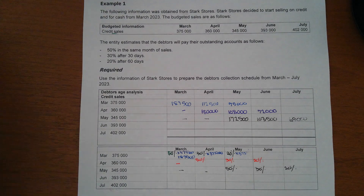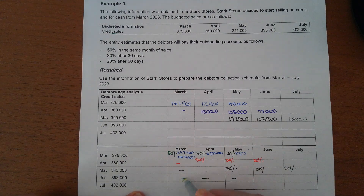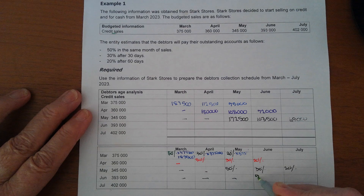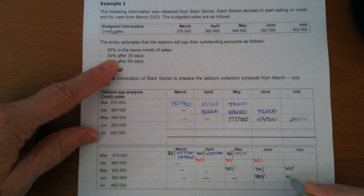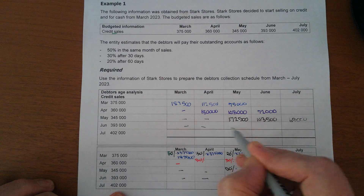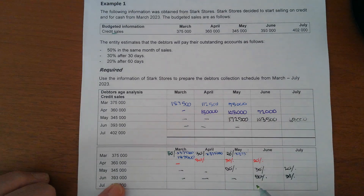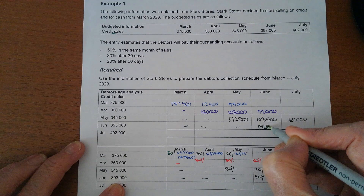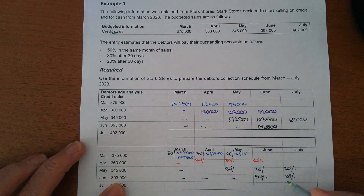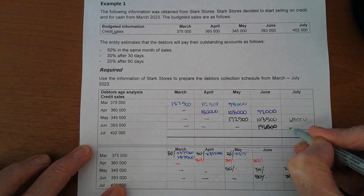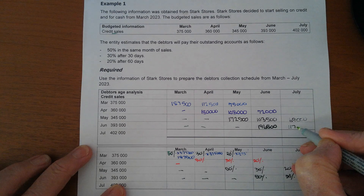For June sales, the first month we collect is June, and we collect 50%. So in June I will show that we collect 50% of R393,000, which gives me R196,500. Then the following month we collect 30%, so 30% times R393,000 equals R117,900.